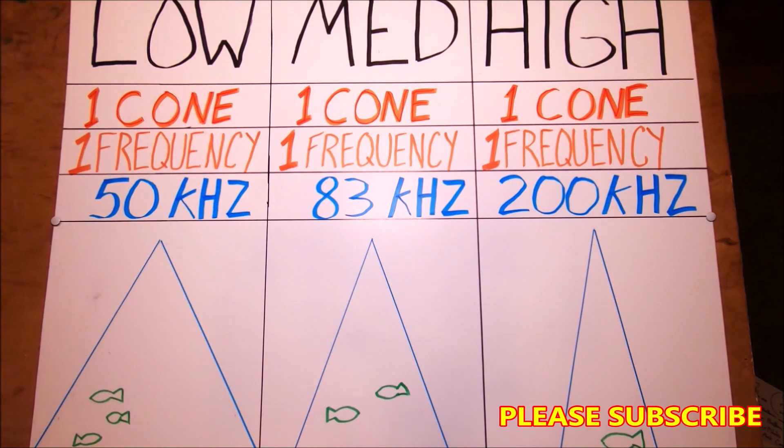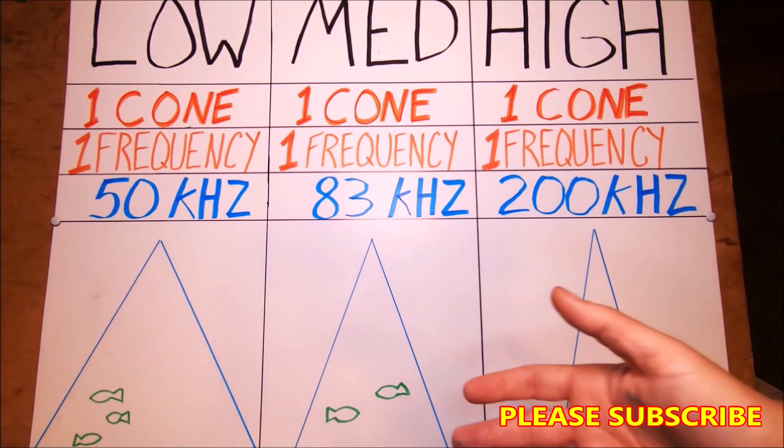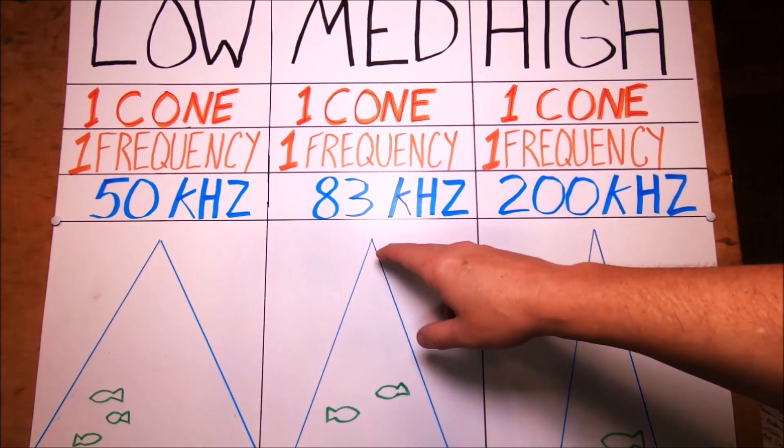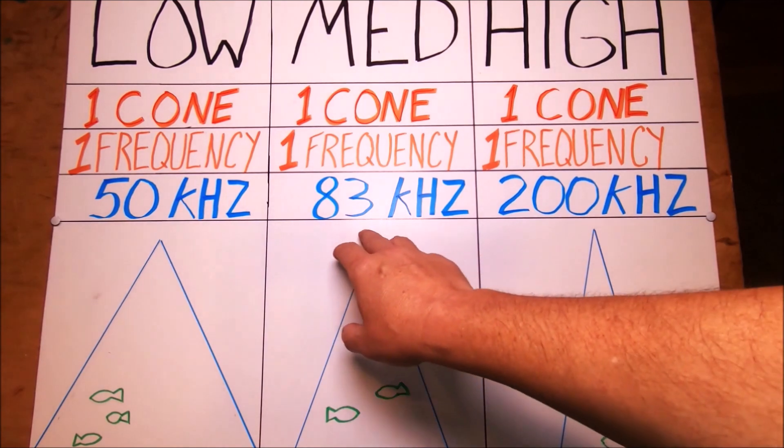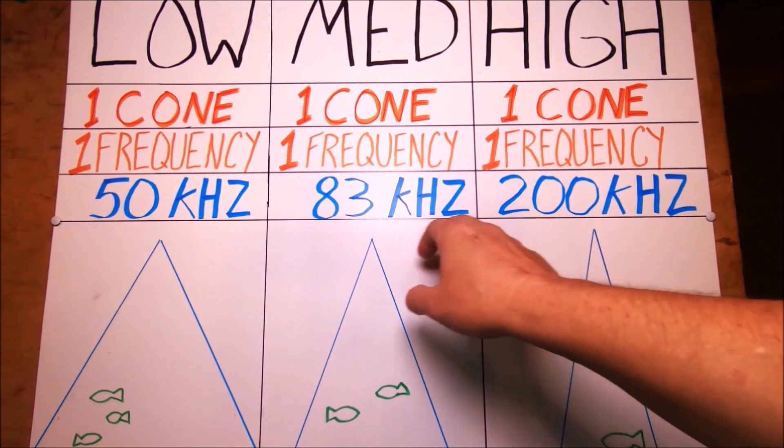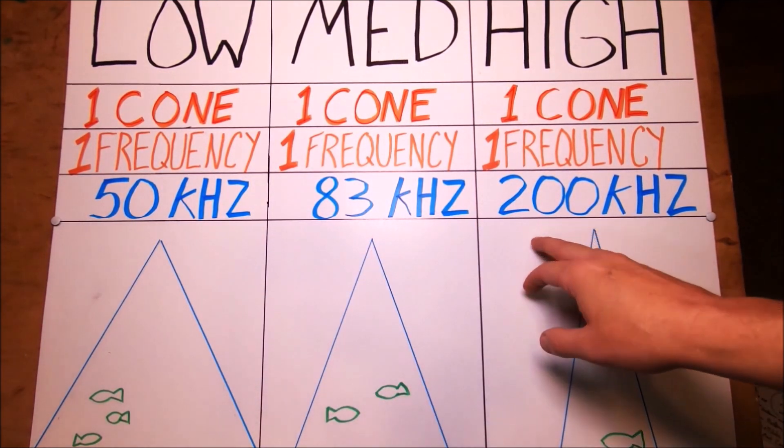Single frequency transducers is what we've been using for years. Typically you're going to get like a 50 kilohertz and 83 or 200 for regular sport fishing. You may have a combination—maybe yours does 50 and 200, maybe it does 83 and 200. This is what we're used to.